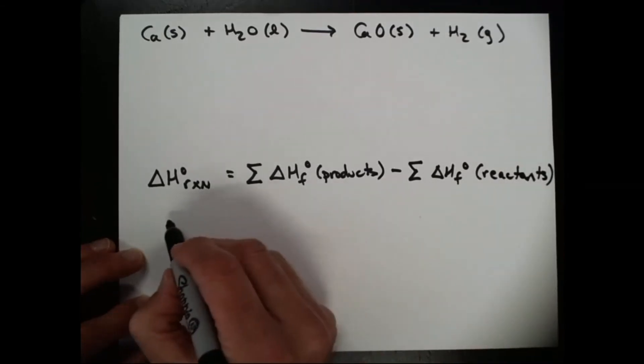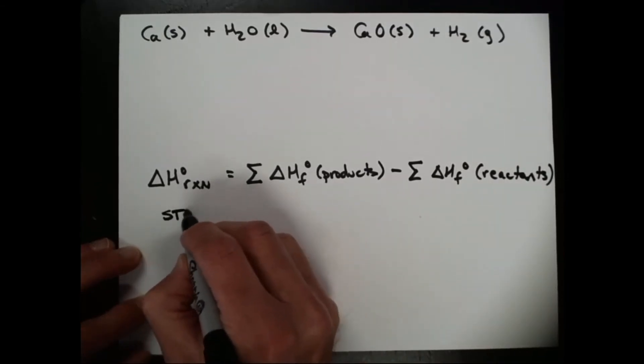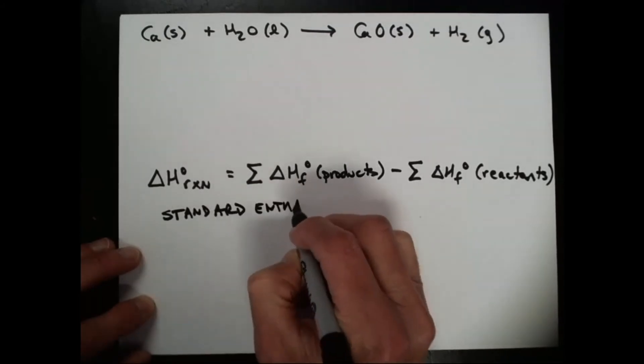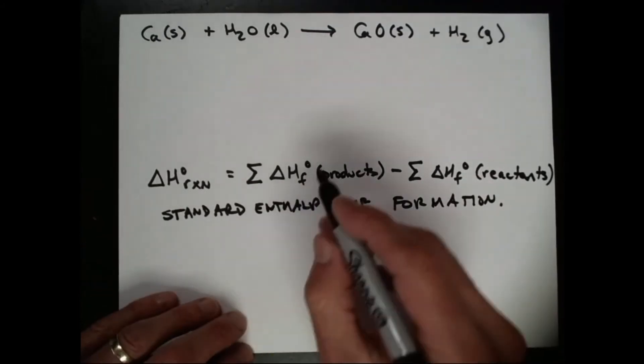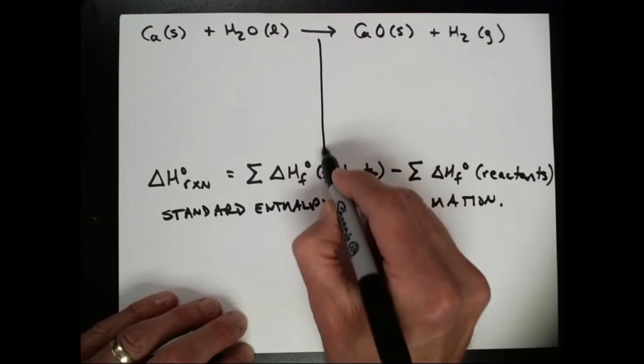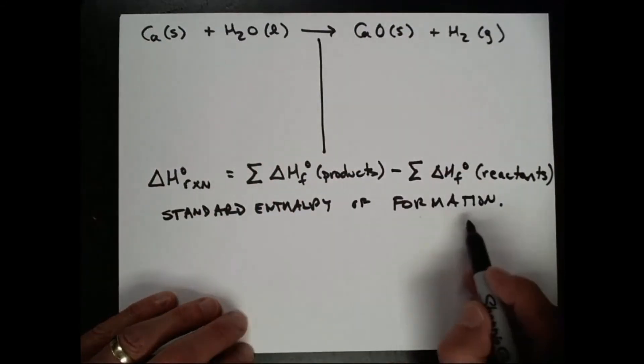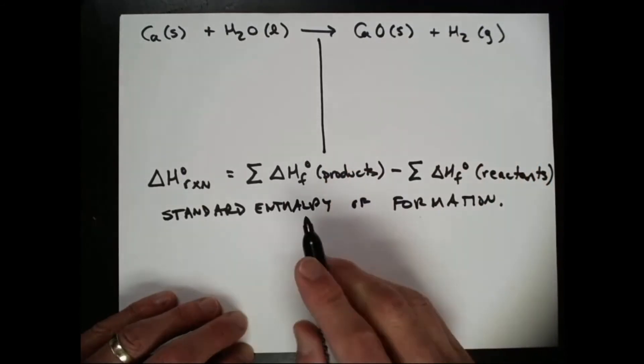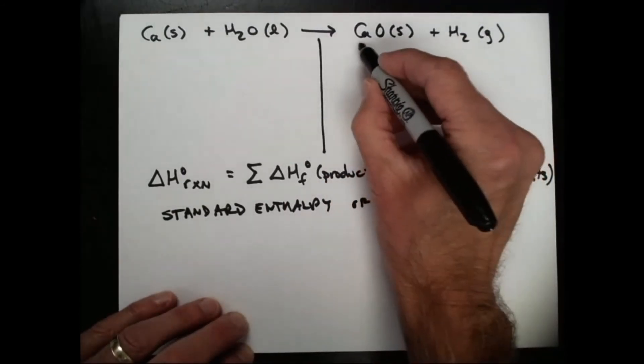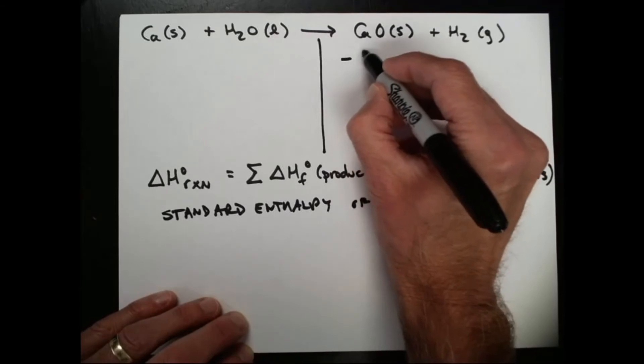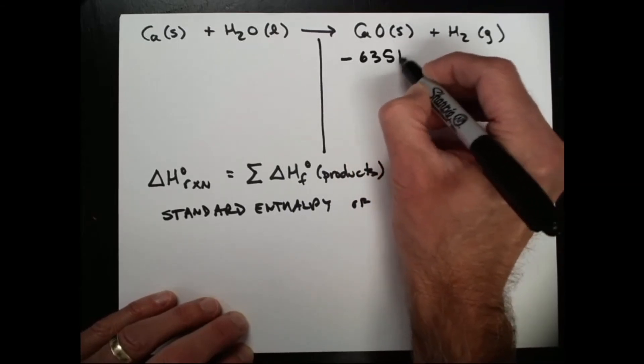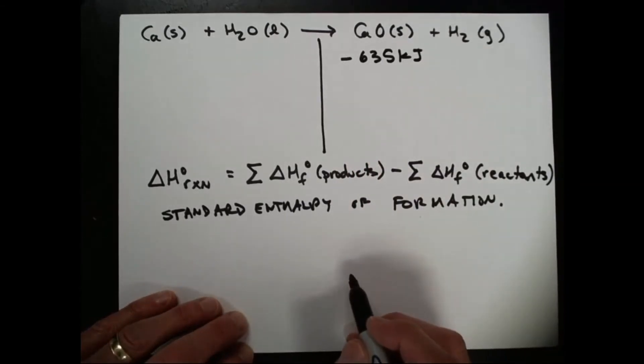These are tabulated values of the standard enthalpy of formation. Okay, so we're going to make a dividing line here to divide the reactants from the products, and if we look up these values for the standard enthalpy of formation of these substances, the standard enthalpy of formation of calcium oxide is negative 635 kilojoules per mole.